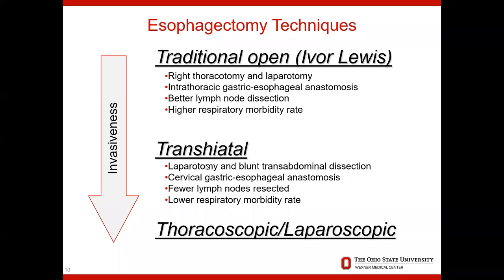The transhiatal operation involves an abdominal incision and a transabdominal dissection of the esophagus. Reconstruction is performed in the neck, avoiding open chest surgery, which results in much lower respiratory complication rates. However, patients have been shown to have fewer lymph nodes removed with this technique. The thoracoscopic and laparoscopic esophagectomy is a minimally invasive operation that avoids both open abdominal and chest surgery, increasing tolerability and resulting in a shorter hospital length of stay and lower complication rate.